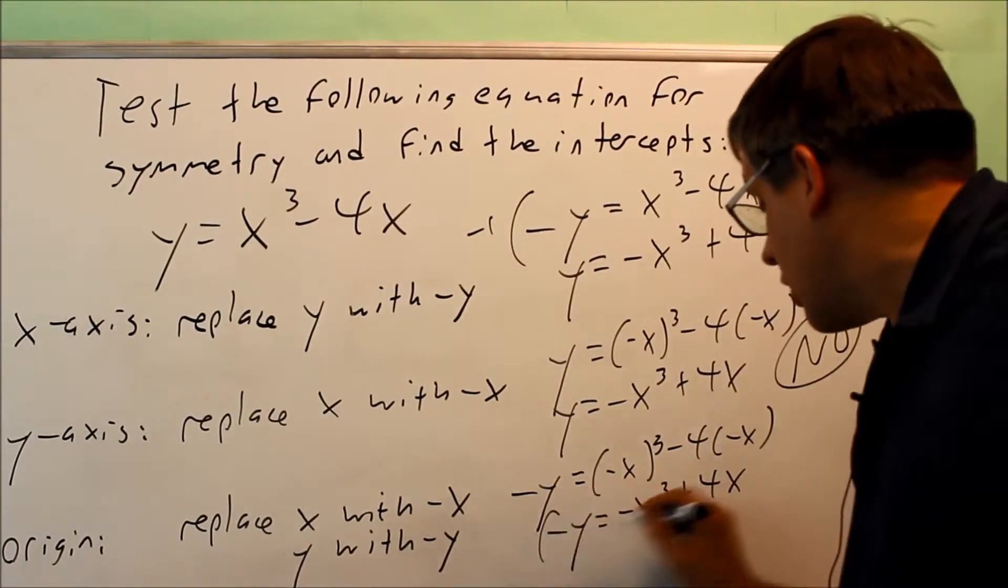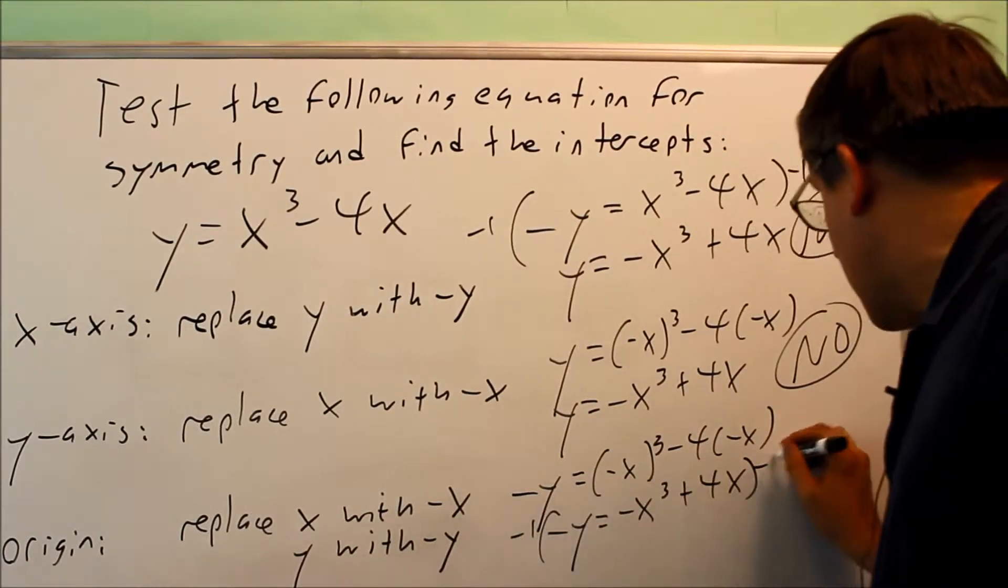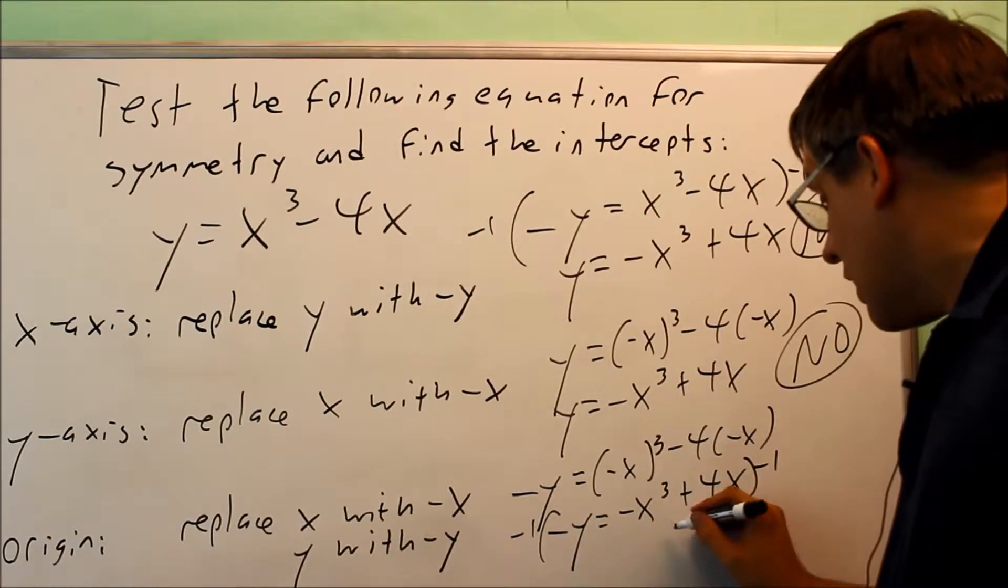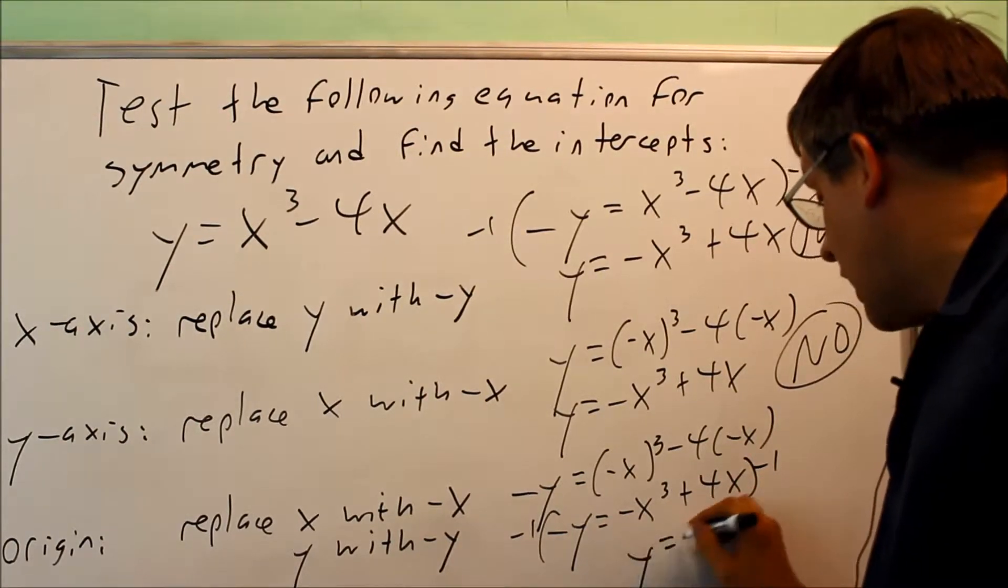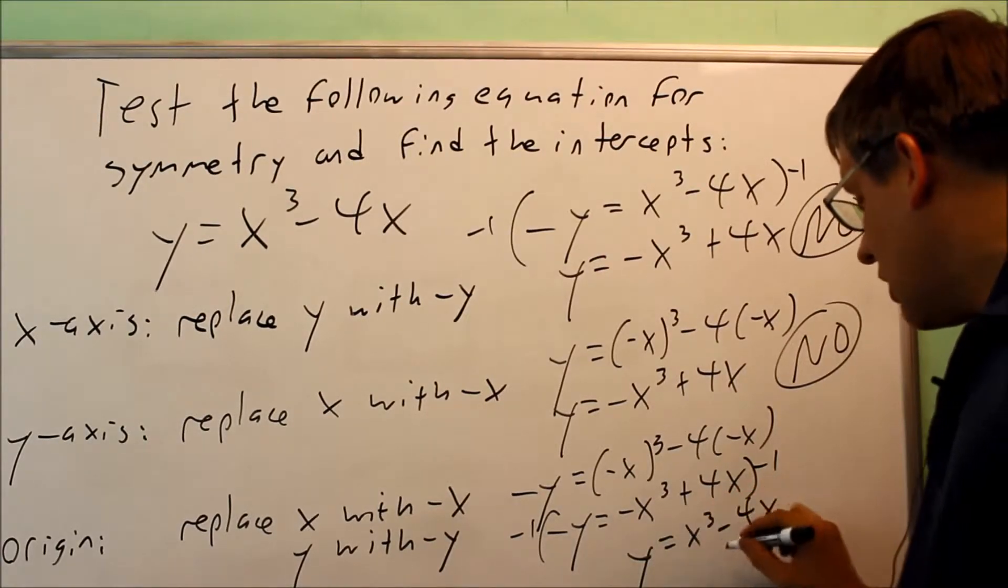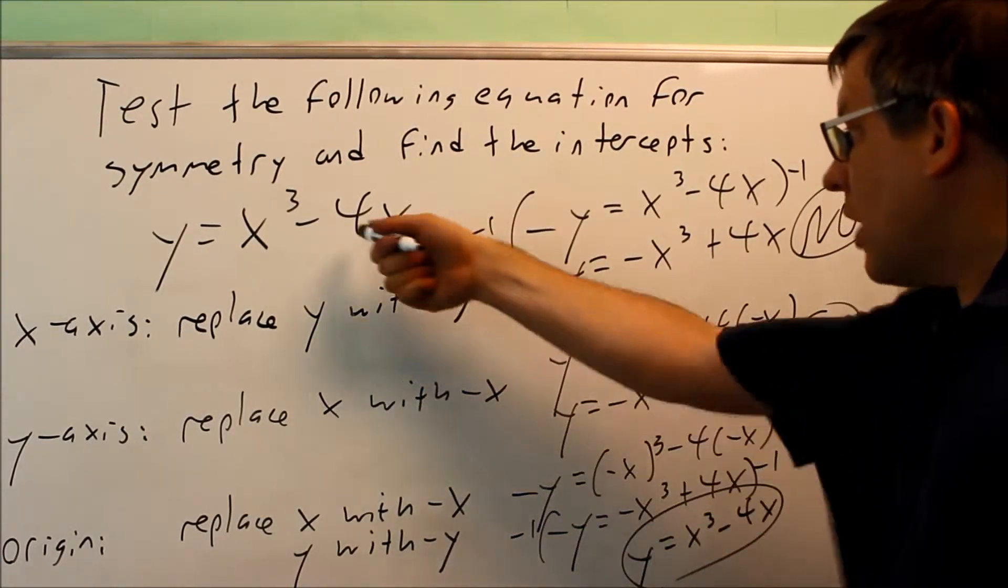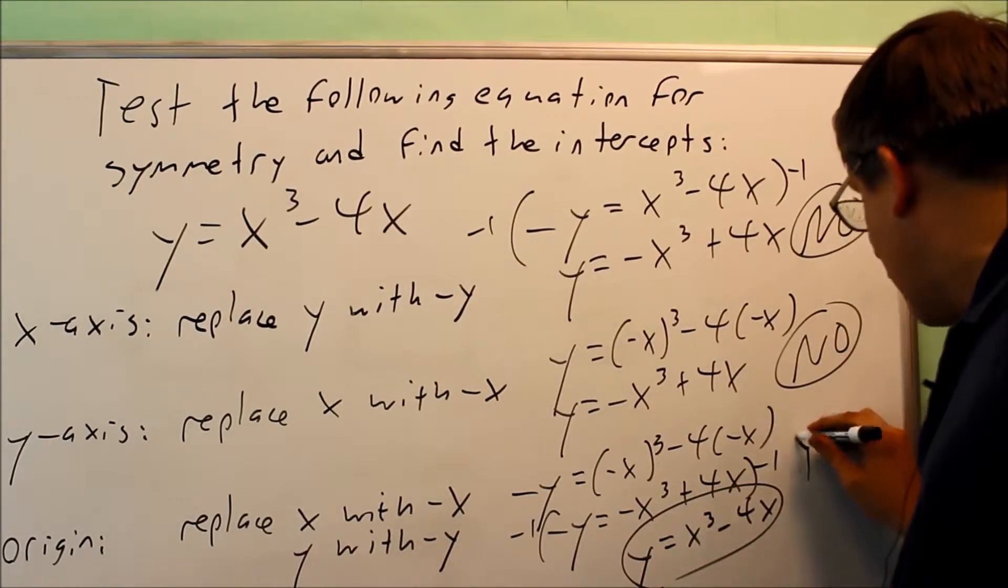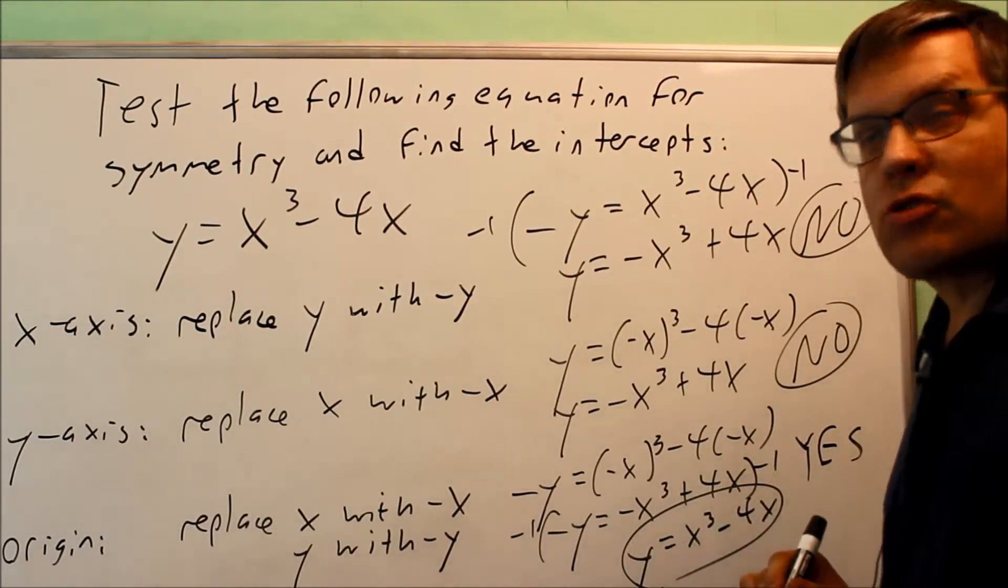However, I still want to take this one, multiply both sides by negative 1, and I get positive y equals positive x cubed minus 4x. Now this is the same as the original one. So this does, in fact, have origin symmetry.